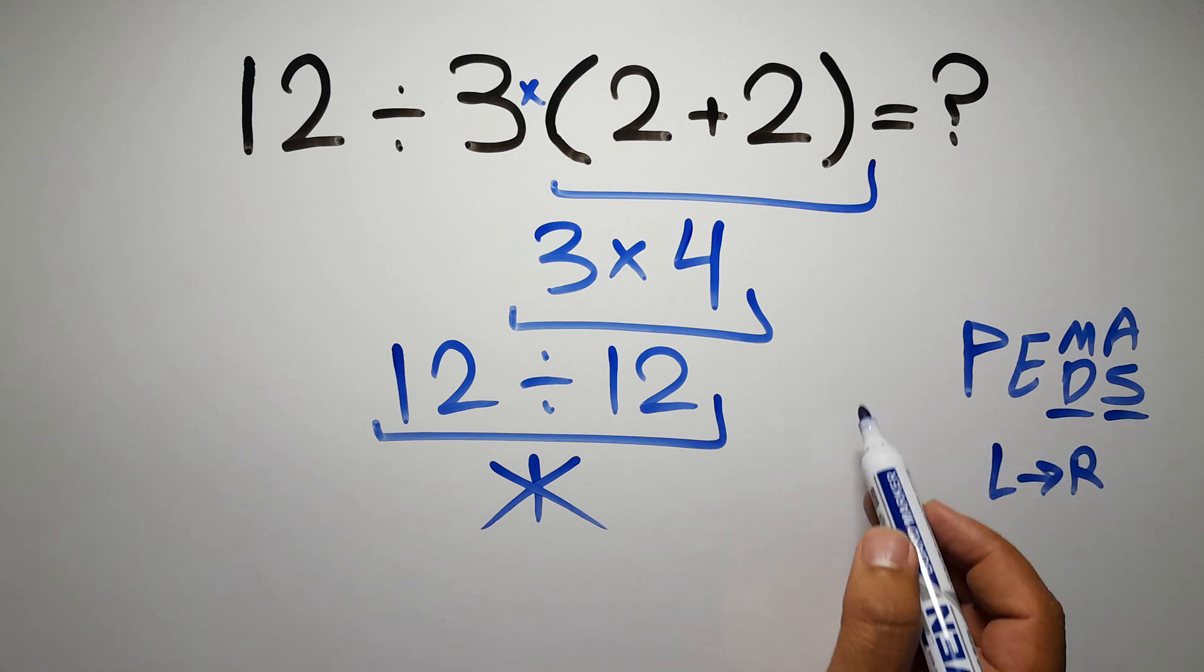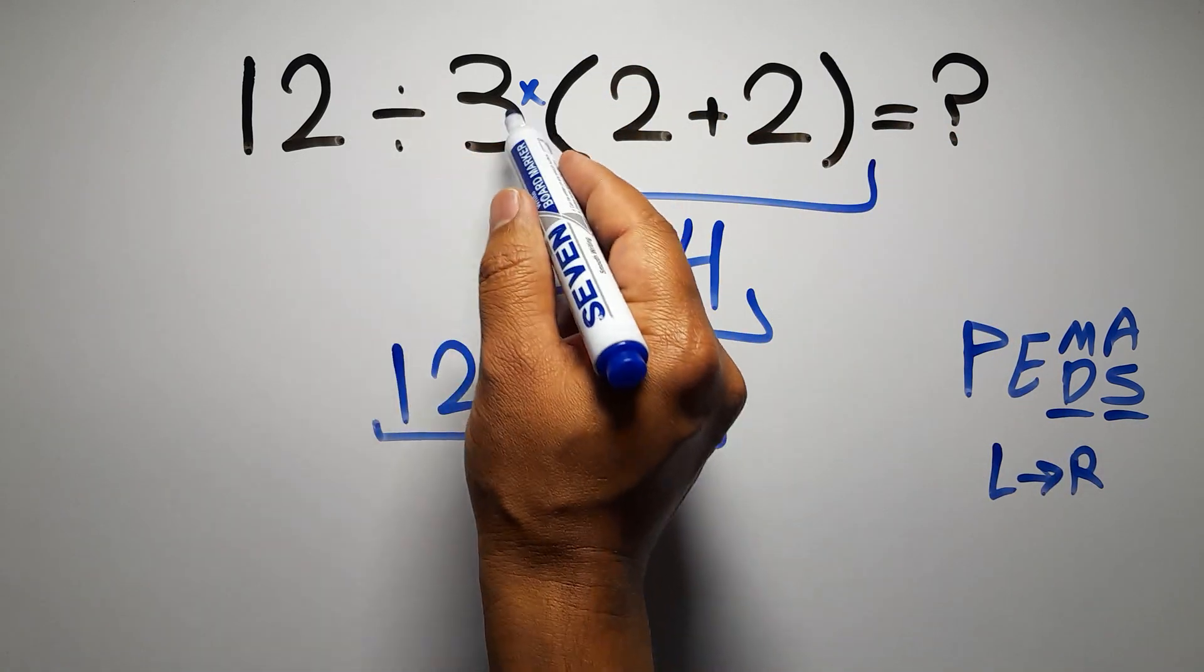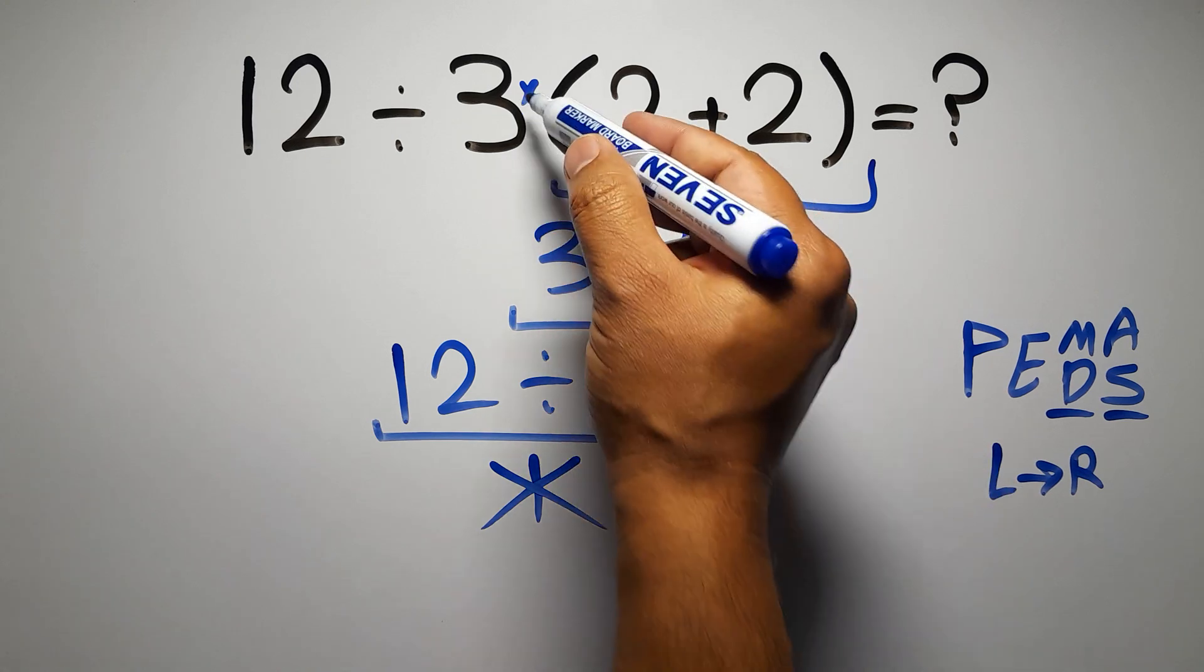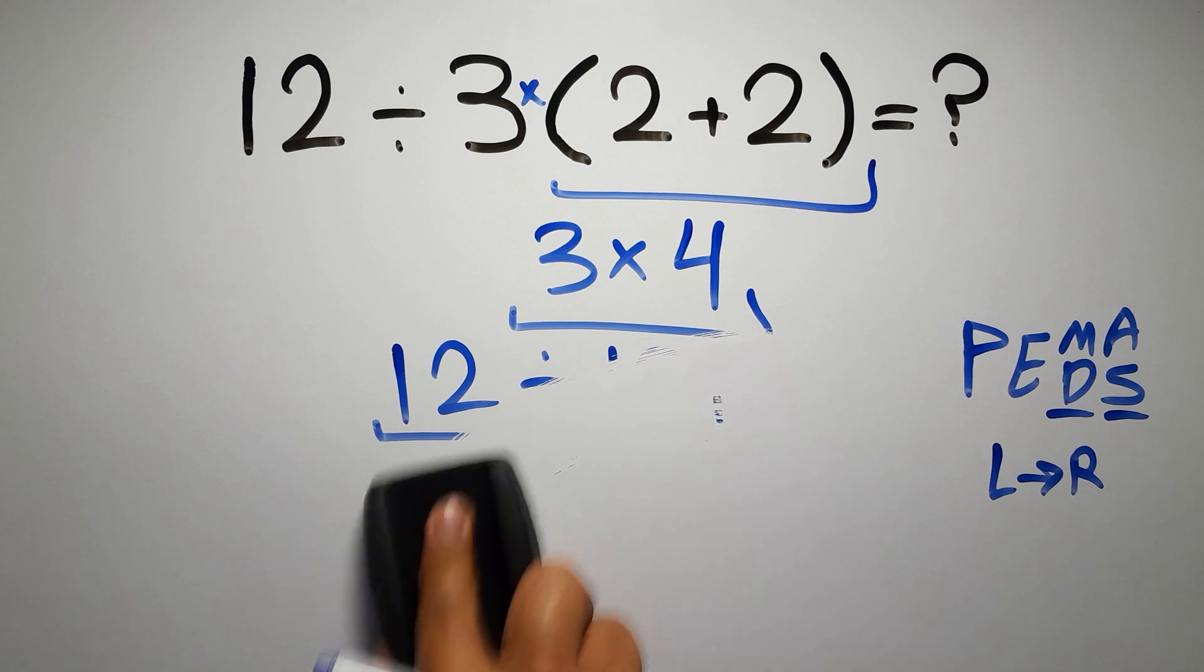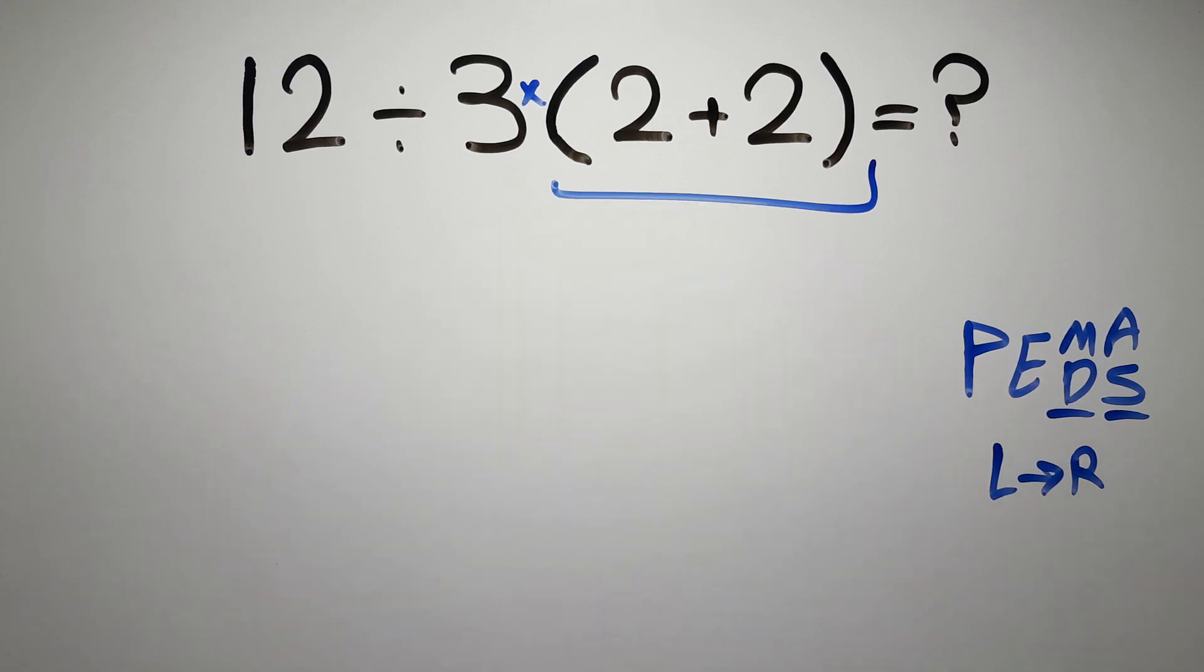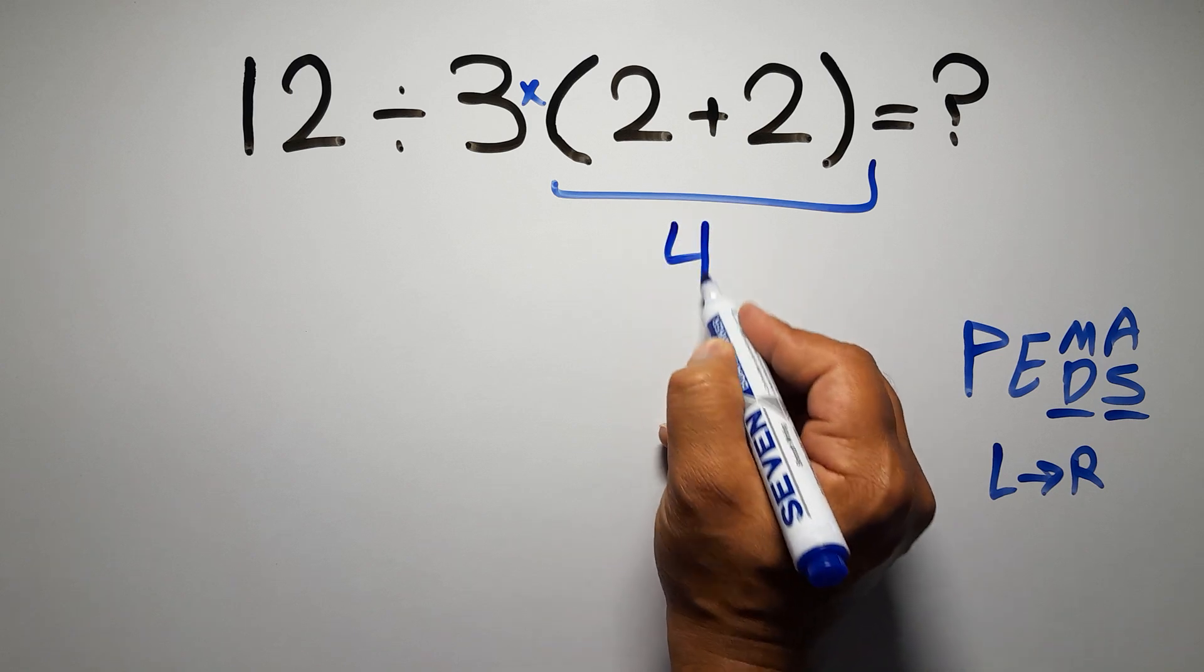According to the PEMDAS, first we have to do these parentheses, then this division, and finally this multiplication. If we do this multiplication before this division, it is wrong. So first these parentheses: inside we have 2 plus 2, which equals 4.